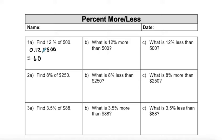In order to find 12% more than 500, I want to take this amount that I figured out in part A and add it to 500. So that'll give me 560.